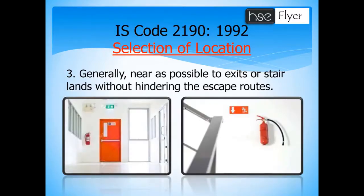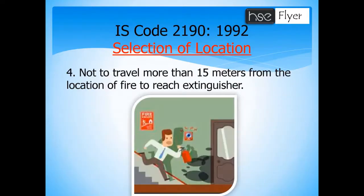The third point is that we should always keep fire extinguishers as close as possible to exits or stairlandings, but they should not hinder the escape routes. The fire extinguisher should be placed where it can be accessed easily, is clearly visible to everyone, and does not disturb or block the emergency escape route.